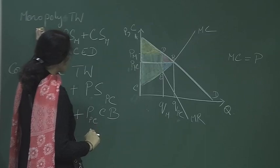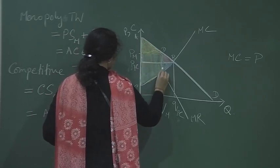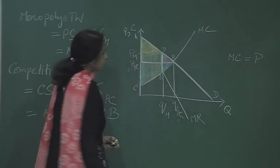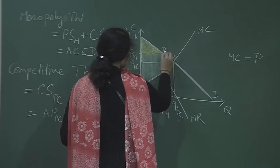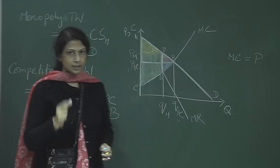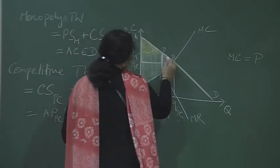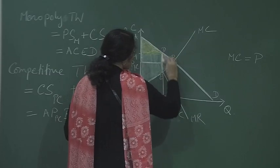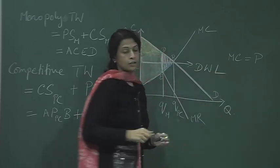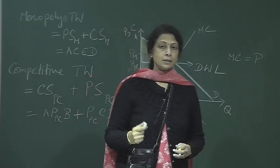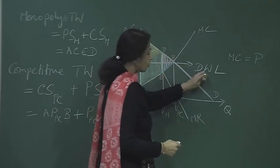Clearly, monopoly total welfare is only this region, while the perfectly competitive outcome welfare has an additional triangle E-D-B. This region E-D-B is lost when the market is a monopoly market — the pink triangle and the blue triangle together form the deadweight loss that the economy suffers when the market has a single seller.